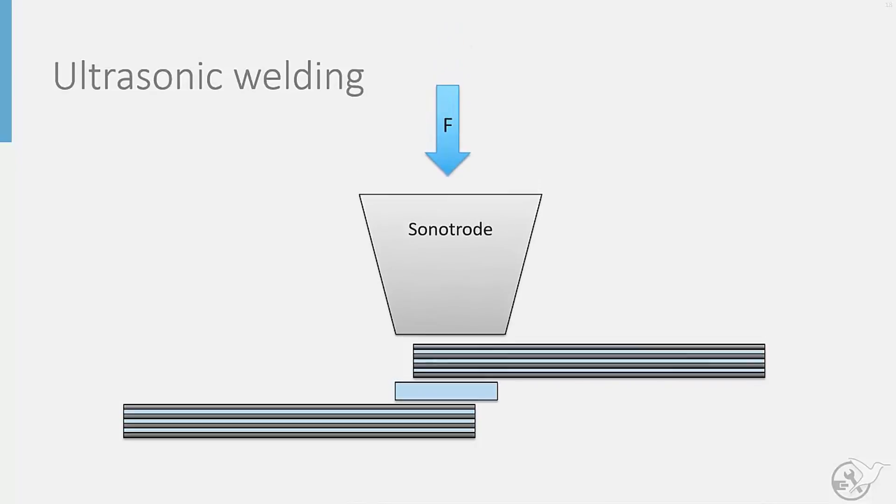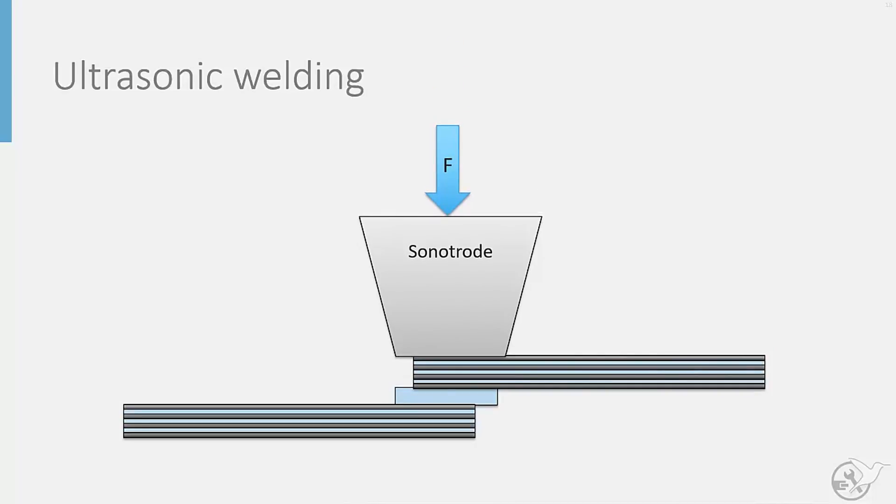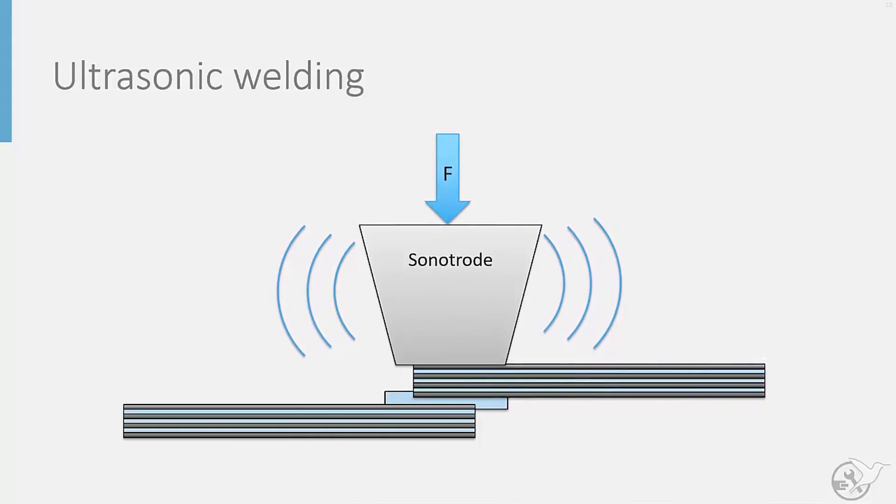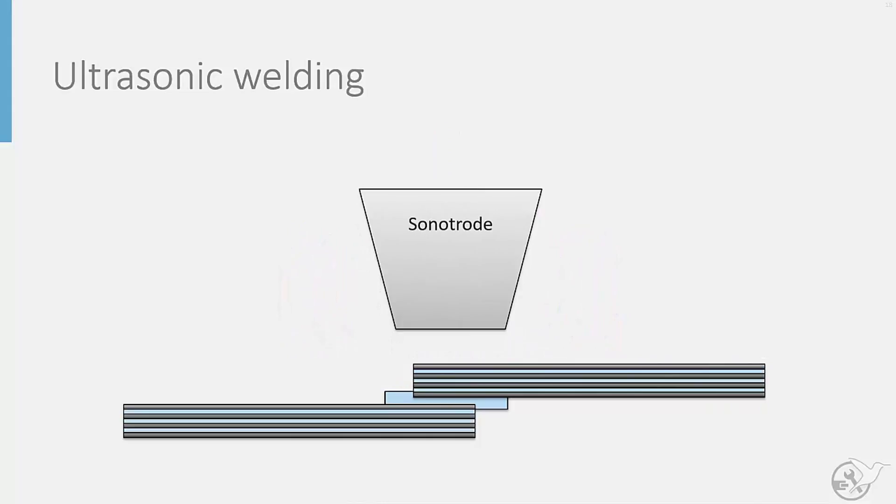Force is applied to the weld area by a sonotrode which also subjects the joint to ultrasonic vibrations. These vibrations cause the flexible resin layer to melt as a result of viscoelastic heating and join the two parts together upon cooling.